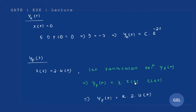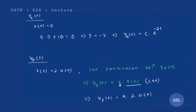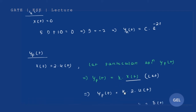We take the assumption that the particular solution y_p(t) = k · x(t), where x(t) = 2·u(t). Once we get the value of k, we can find y_p(t) = k · 2 · u(t).